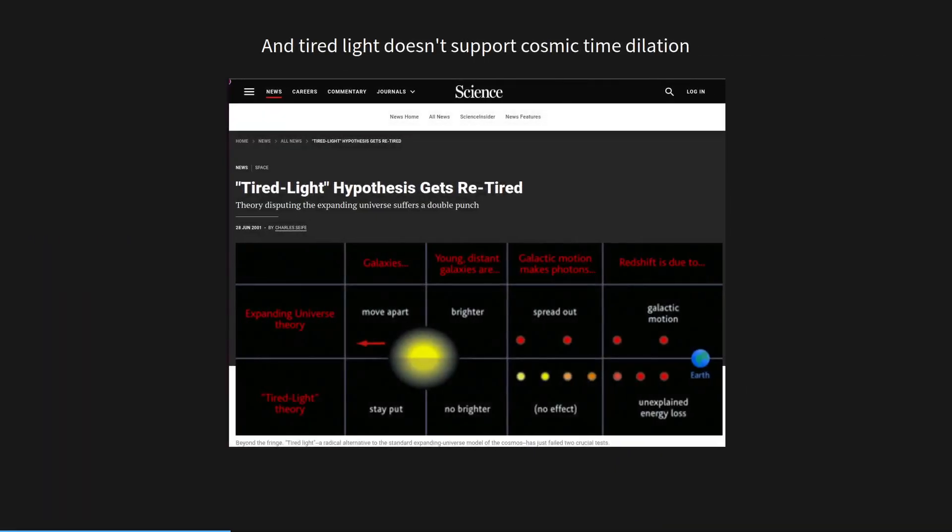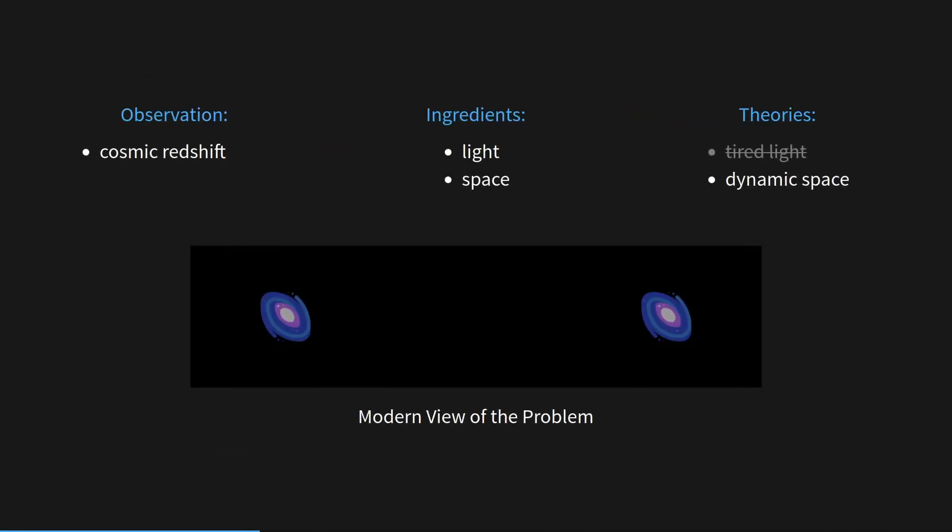Tired light doesn't support cosmic time dilation. Check out episode 5 for more about time dilation. So the modern view of the problem should include time dilation, and it has light traveling through space and time, which means we could have a dynamic theory of time.